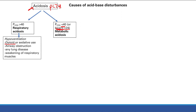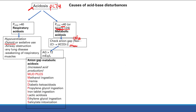Metabolic acidosis — we have to check the anion gap, because we can divide the causes into a high/increased anion gap and a normal anion gap metabolic acidosis. The anion gap is the difference between sodium (the positively charged cation) and the measured anions — chloride and bicarb. Normally there's a difference of about 12. If you have less than 12, it's a normal anion gap; if greater than 12, you have an increased anion gap — an anion gap metabolic acidosis.